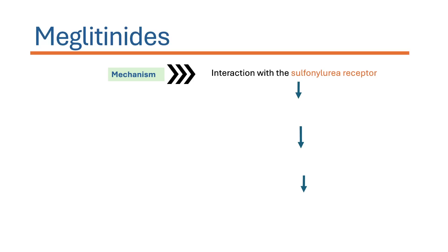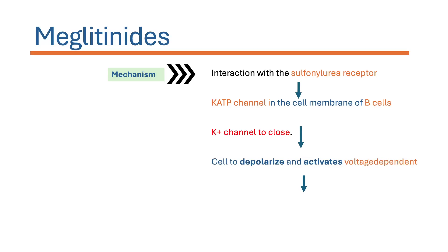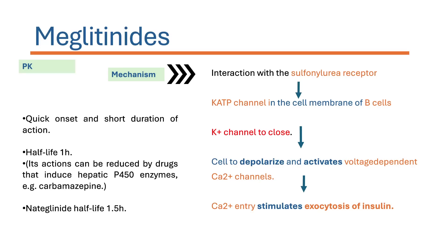The mechanism of action is similar to that of the sulfonylureas: meglitinides interact with the sulfonylurea receptor, activate the potassium ATP channel in the cell membrane of beta cells, and close the potassium channel. This is followed by depolarization of the cell membrane, activation of the voltage-dependent calcium channel, and calcium entry, which stimulates exocytosis — the release of insulin from the pancreatic beta cells.